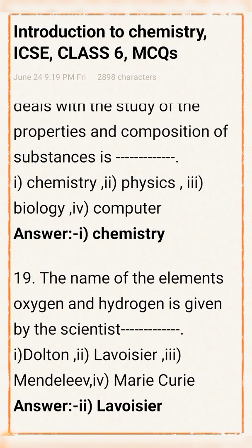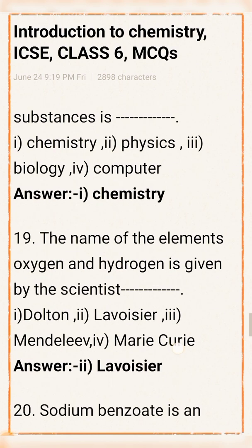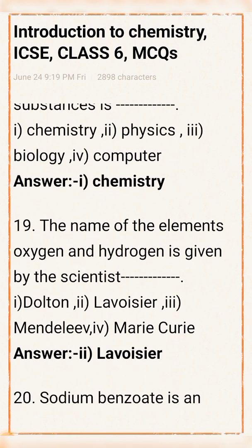Question number 19: The names of the elements oxygen and hydrogen were given by which scientist? Option 1: Dalton. Option 2: Lavoisier. Option 3: Mendeleev. Option 4: Marie Curie. Answer: Option 2, Lavoisier, is the right answer.